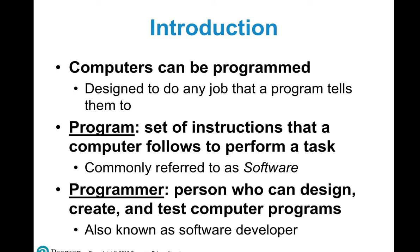A program is a set of instructions that a computer follows to perform a task. For example, in this new era of Bluetooth, let's say you develop a device similar to a drone with your own camera and GPS. By using Bluetooth and software development you can make it do what you want. That's commonly referred to as software. A programmer is a person who designs and writes computer programs — someone who writes code, like developing an application like Facebook or Uber.